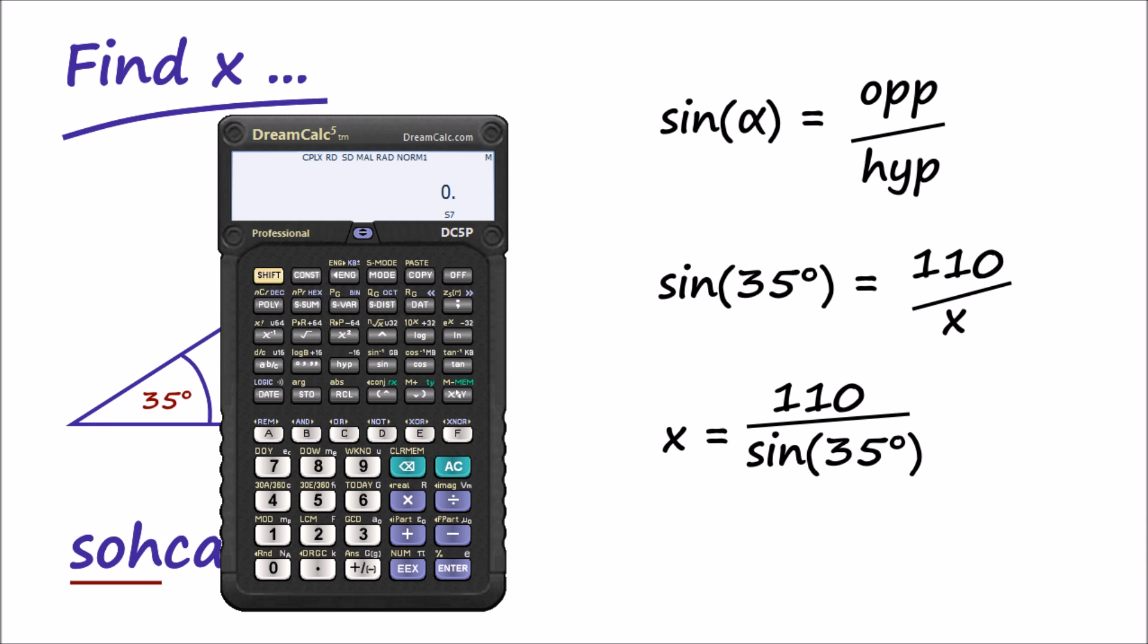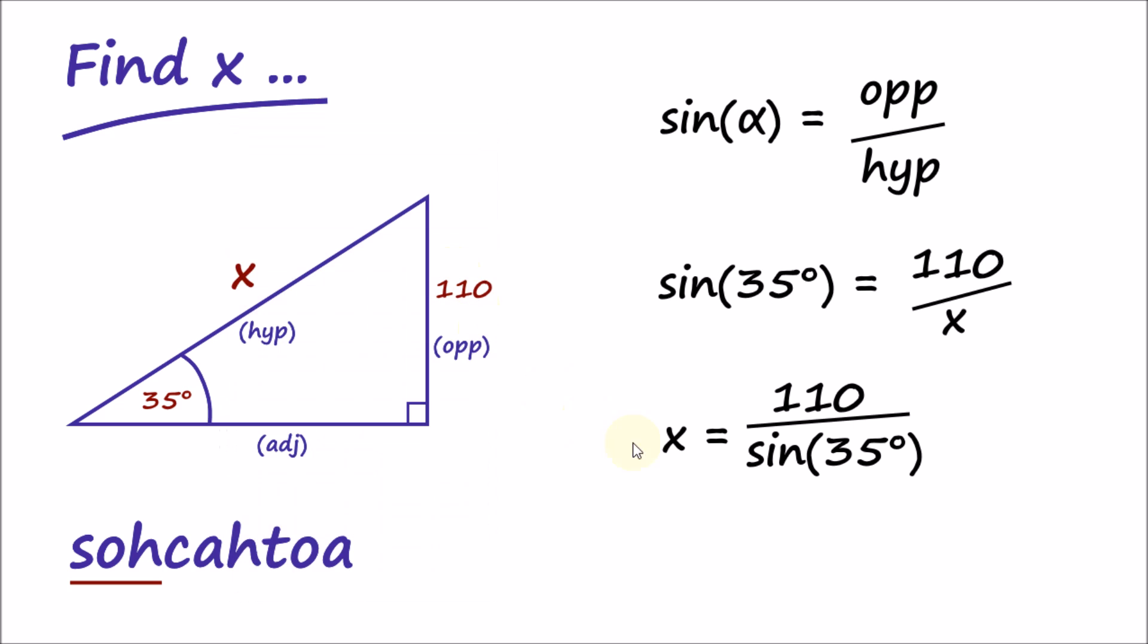So now, let's go ahead and use DreamCalc to calculate the result. First, we need to ensure that the angle mode is set to use degrees. Base and mode, angle mode, degrees, and key in the values. 110 divided by sine 35 equals 191.779. We can then copy the result into the clipboard, and paste it into our presentation to finish.